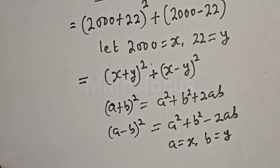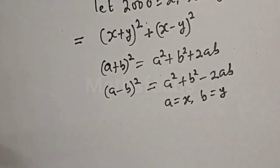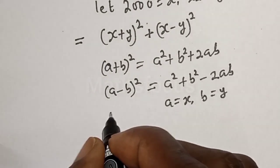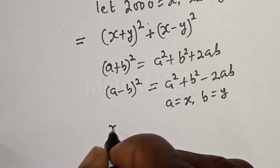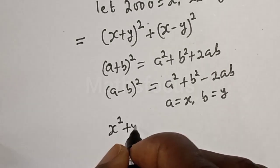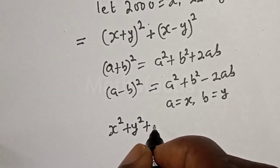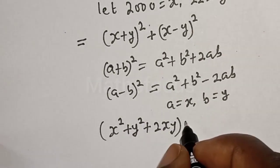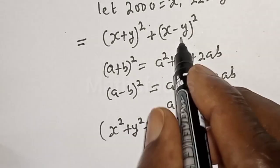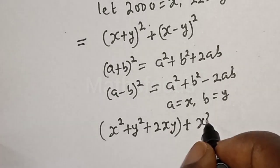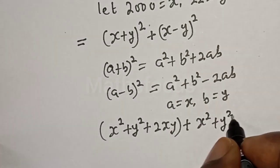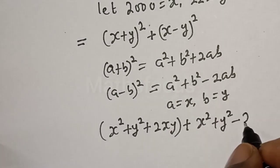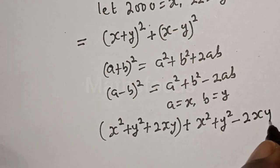So this is x² plus y² plus 2xy, plus x² plus y² minus 2xy.